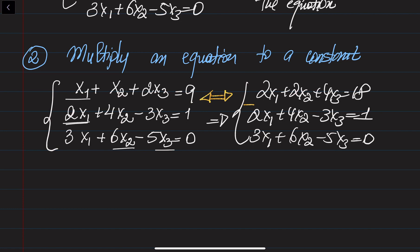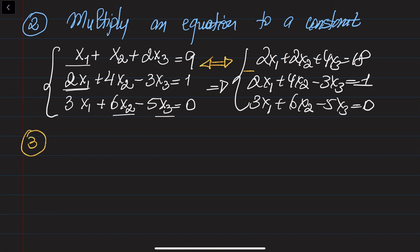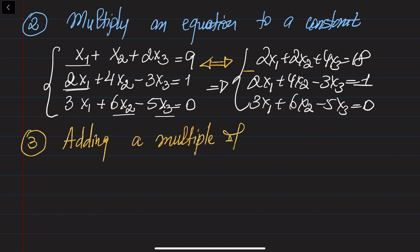These two systems are equivalent — not equal, but equivalent. I could subtract the second equation from the first one, and then I wouldn't have x1 in both equations, so I would have only two variables. The third operation is adding a multiple of an equation to another one.